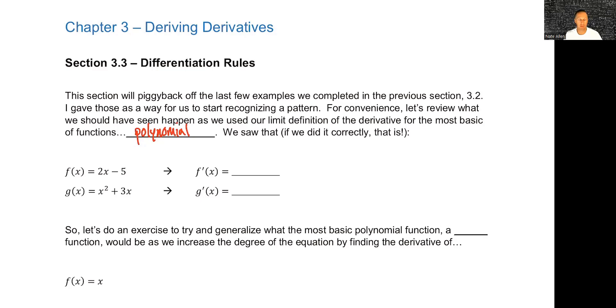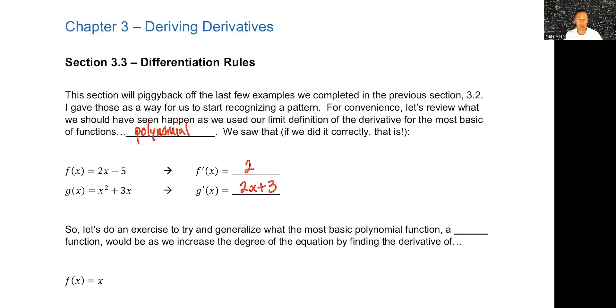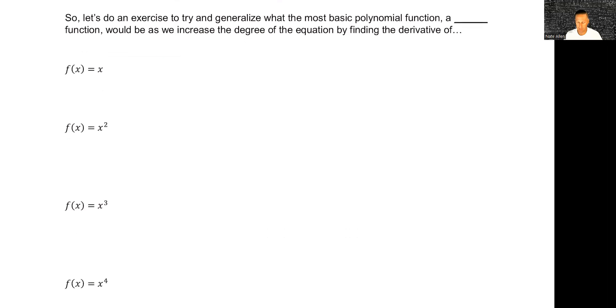I gave you 2x minus 5 as one of the functions. And you should have come up with a derivative of 2. And then for the other one, g of x, which was x squared plus 3x, you should have come up with the derivative of 2x plus 3. And these are things that eventually, hopefully sooner than later, after this section even, we will be able to look at this and say it's that without having to do the big limit definition.